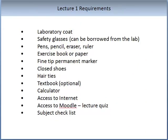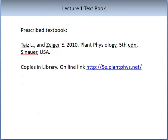The following slide gives a list of requirements to complete this subject. The two most important are access to Moodle — to look at the lecture material and complete the quizzes and the subject checklist — and the prescribed textbook, the Teys and Zeiger 2010 Plant Physiology 5th Edition. We do not recommend purchasing it as there are copies in the library and online links are also available. Past students have told us it can be found in other languages, including Chinese and German.